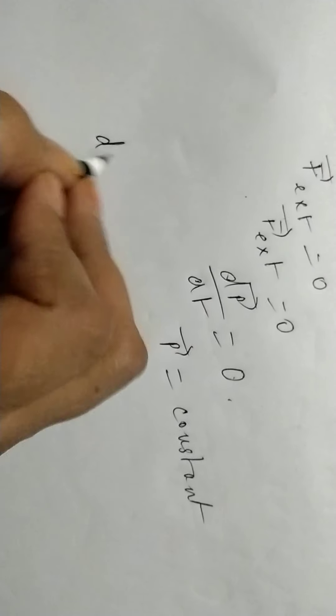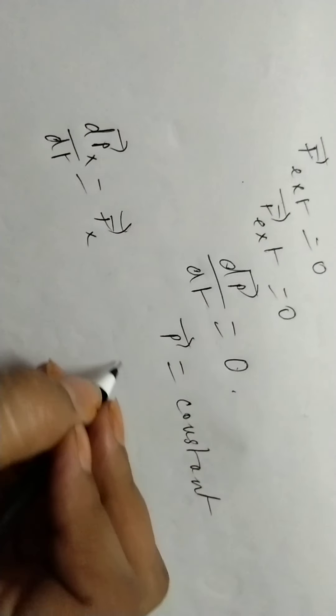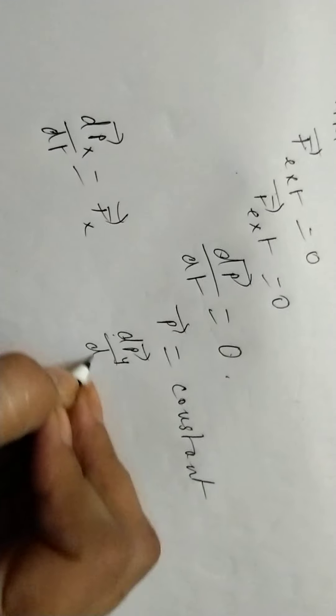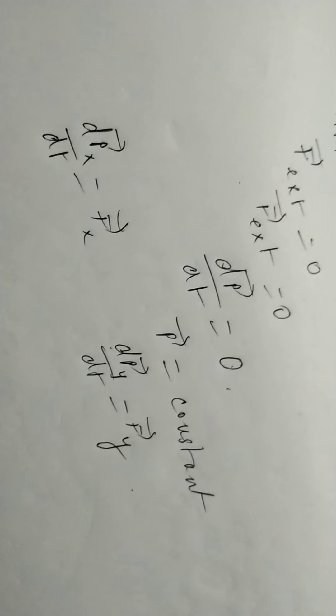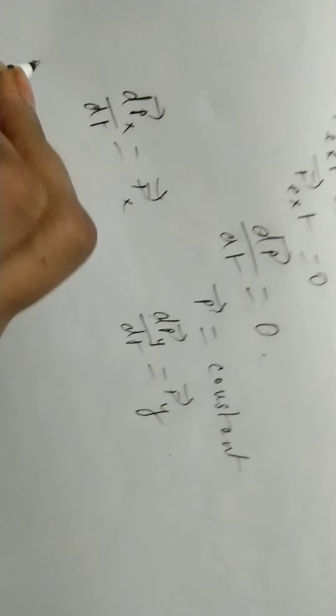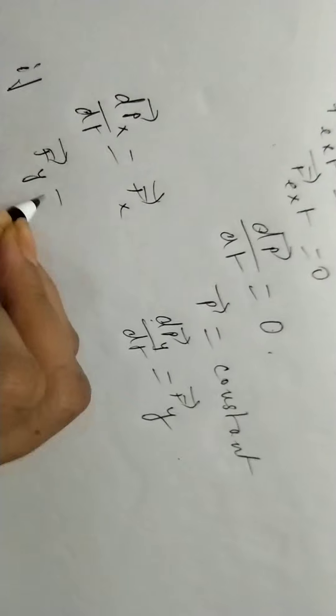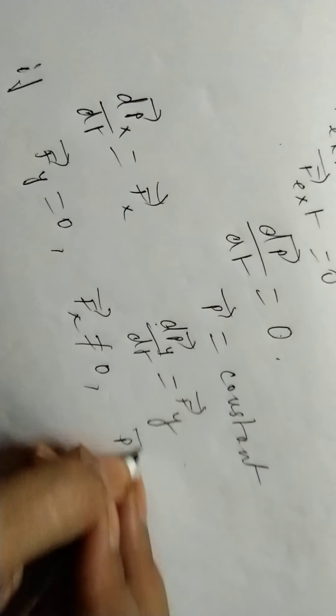In two dimensions, we can write dp vector x by dt equals f vector x and dp vector y by dt equals f vector y. If f y vector equals zero but f x vector is not equal to zero, then p y vector is equal to a constant. This is another very important result from the law.